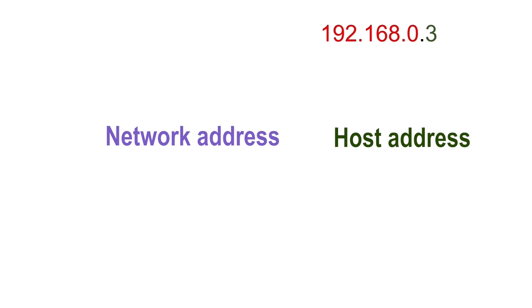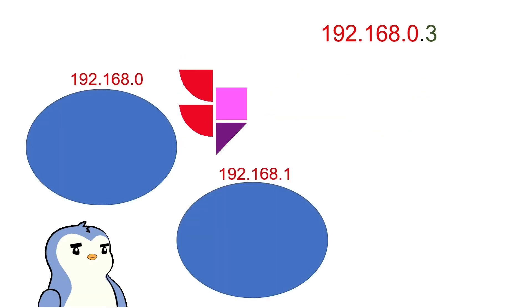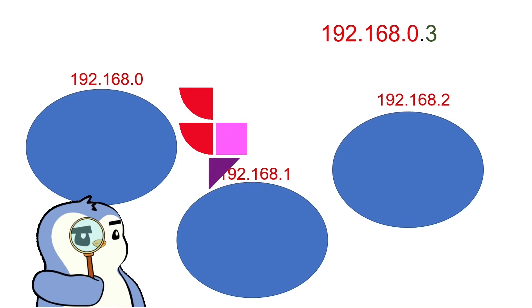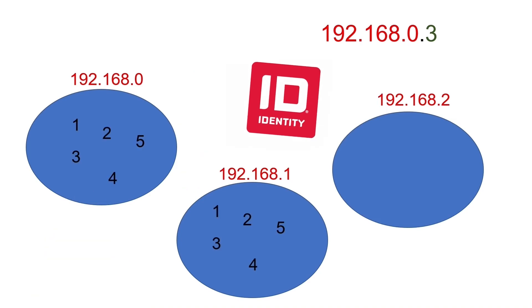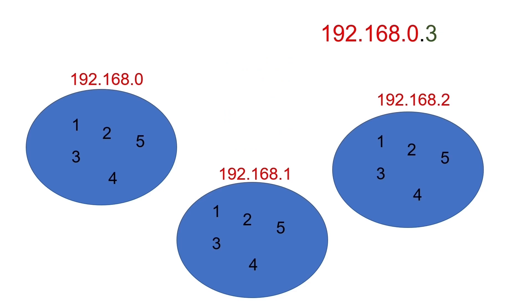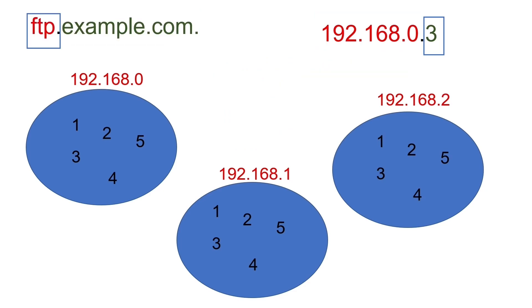For example, in the IP address 192.168.0.3, the network address is 192.168.0 and the host address is 3. Network addresses are used to organize and find IP addresses. Host addresses are used to provide a unique identity to an endpoint or a resource. A network address is like a domain name, and a host address is similar to a resource name.